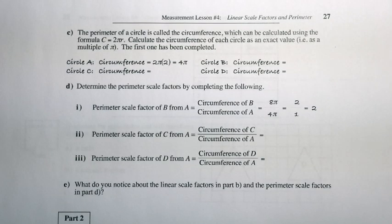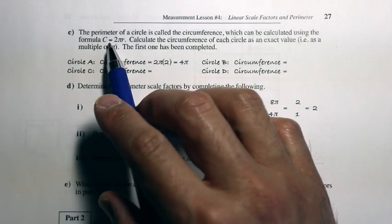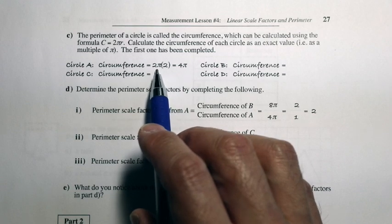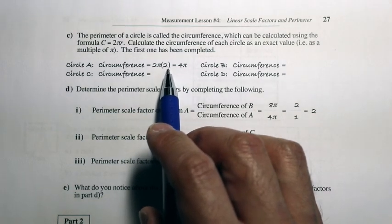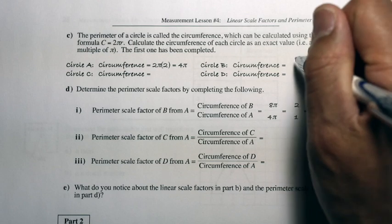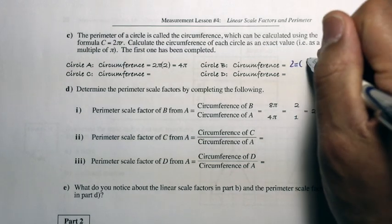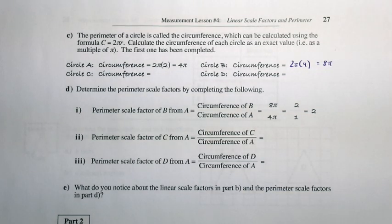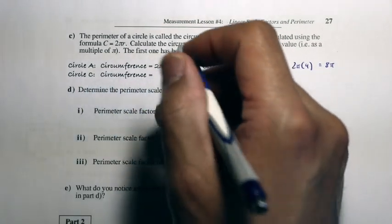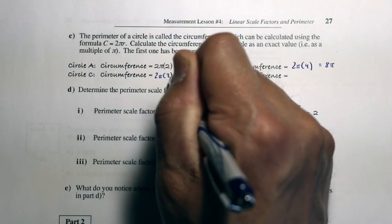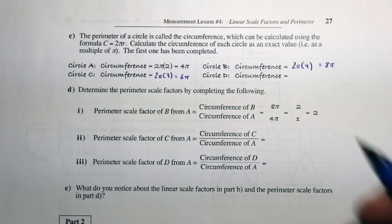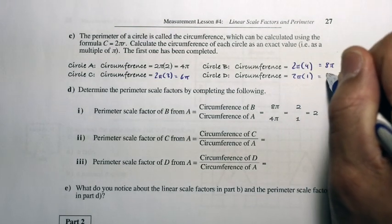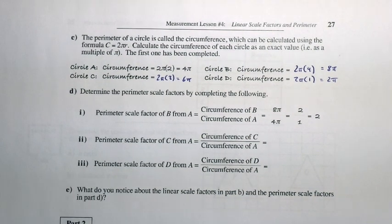The perimeter of a circle is called circumference, and it can be calculated using C equals 2 pi r. Circle A has a circumference of 2 pi times 2, which is 4 pi. Circle B has a circumference of 2 pi times 4, which simplifies to 8 pi. Circle C has a circumference of 2 pi times 3, which simplifies to 6 pi. And circle D has a circumference of 2 pi times 1, which is 2 pi.